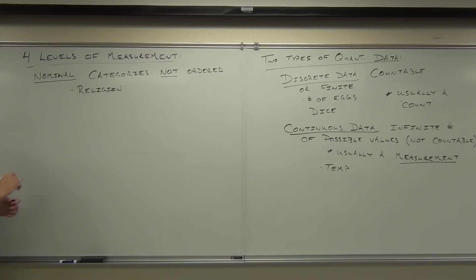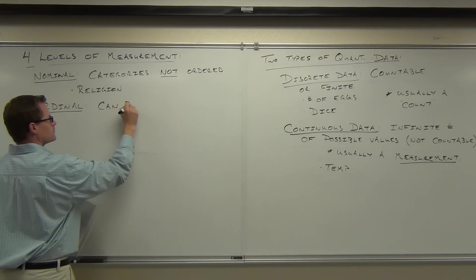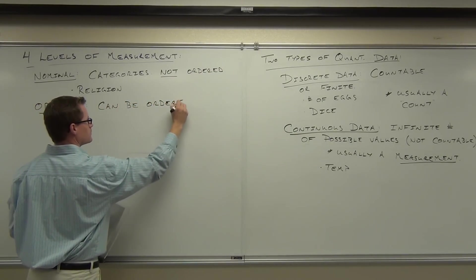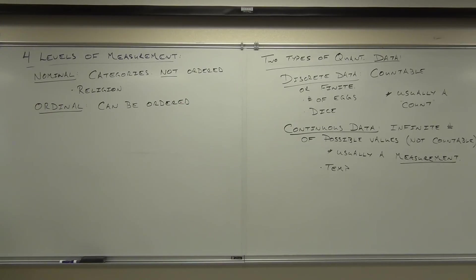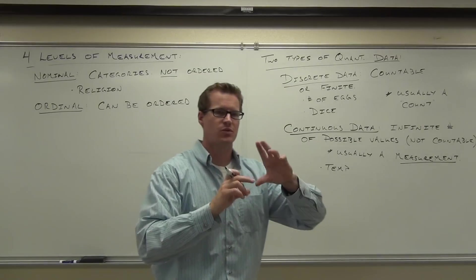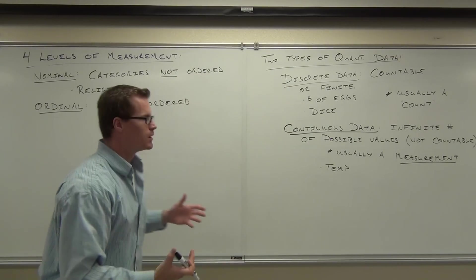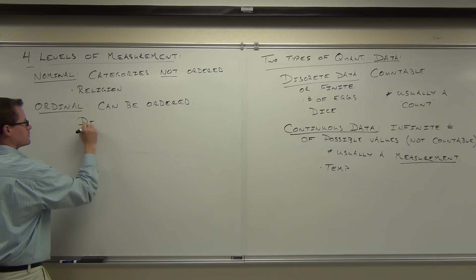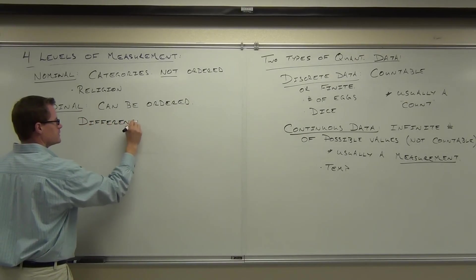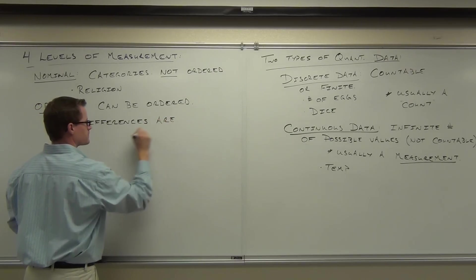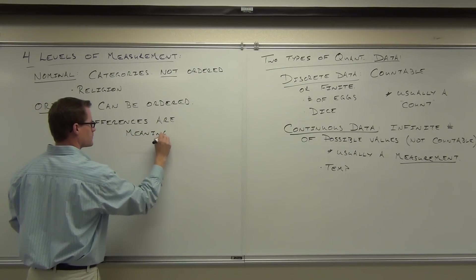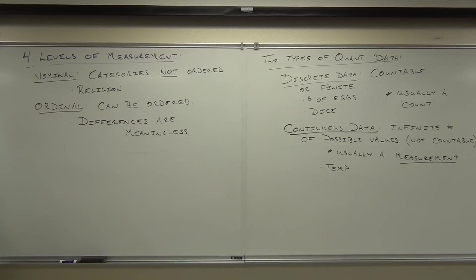You certainly can't do mathematics on them. Are you with me on this so far? So nominal refers to just categories only. It's not ordered. Something like religion or race or gender. The next one is called ordinal. What do you think the keyword in ordinal is? Ordinal. Yeah. This is data that can be ordered. Can be ordered. The thing about ordinal, though, is that while it can be ordered, the differences between the categories or the numbers don't mean a whole lot. So differences are meaningless. I'll explain that in a second. Differences are meaningless.